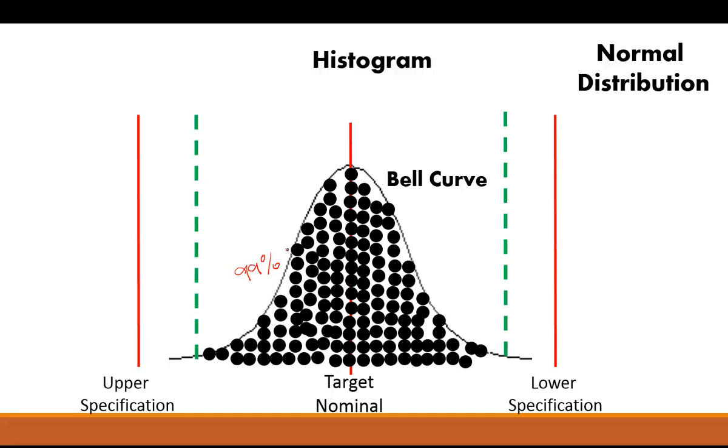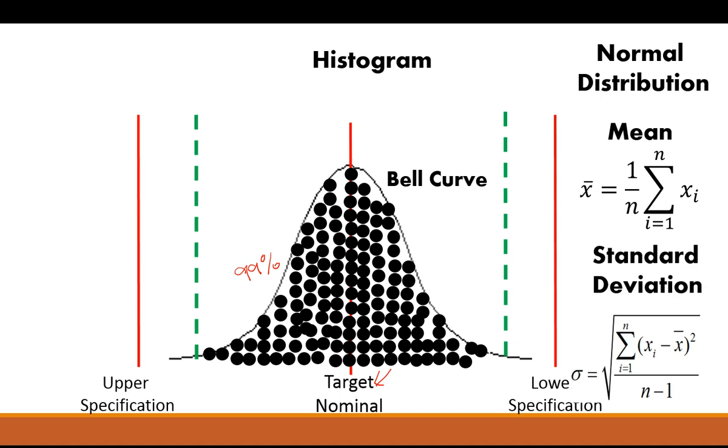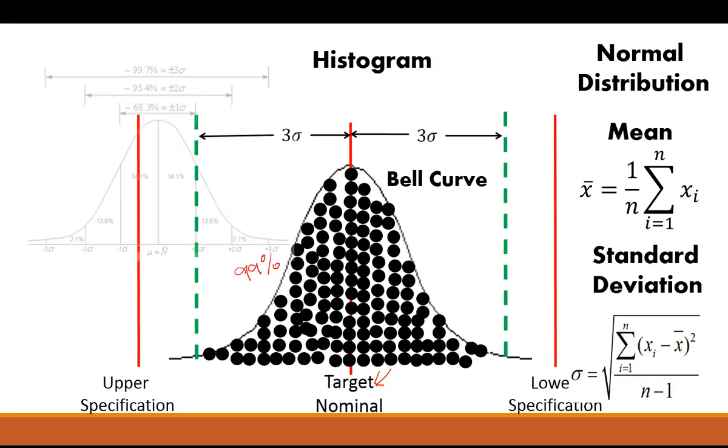So there is the normal distribution, the bell curve, and this is a formula. So this mean, it should still line up with your target or your nominal dimension. And you'll be able to take the standard deviation, or how much variance there is, average variance for the process, and still line up with your bell curve and demonstrate your normal variation.